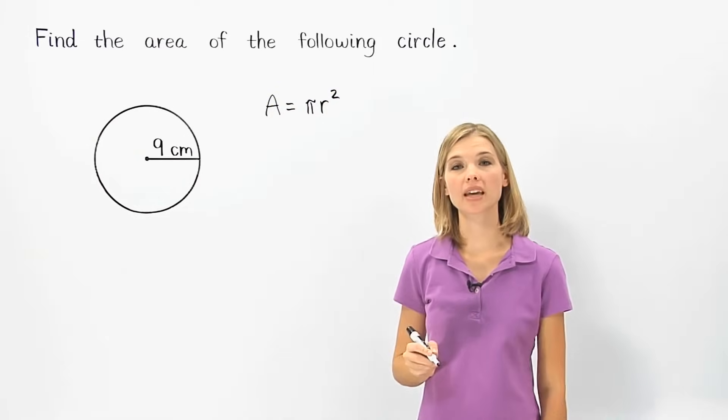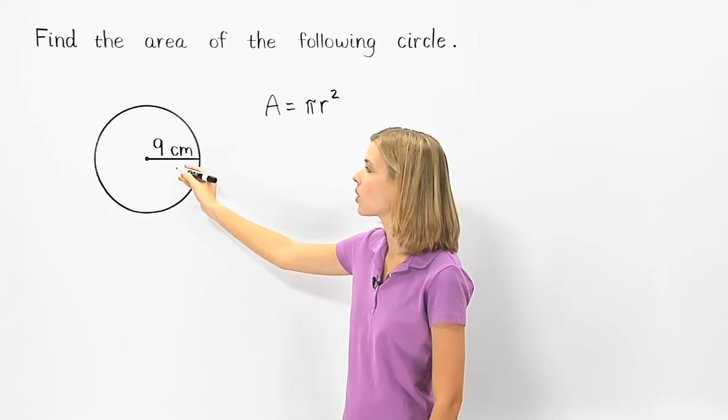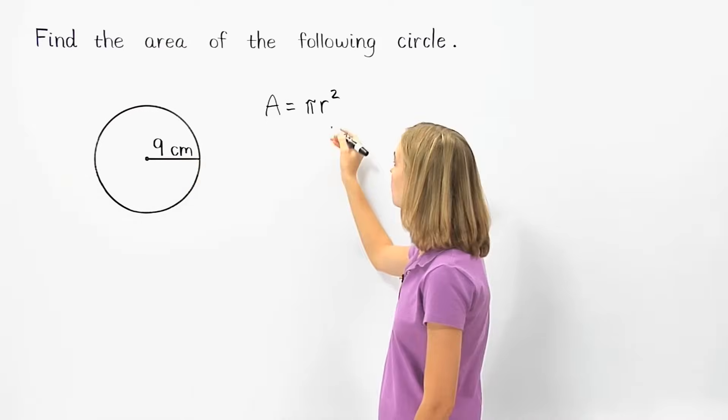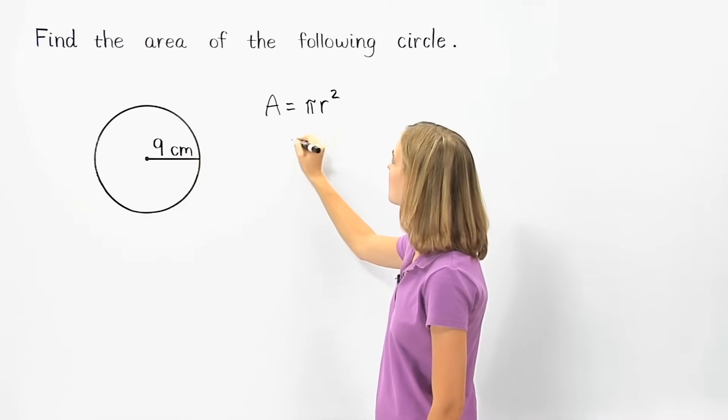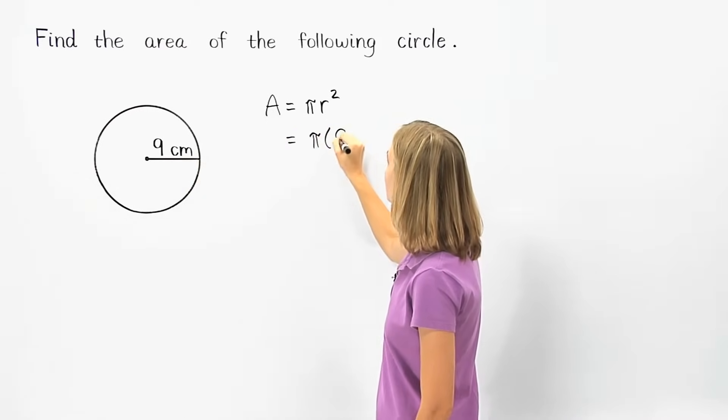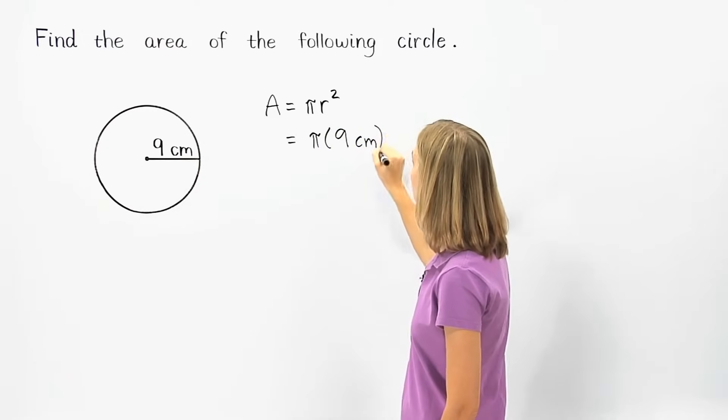Since the radius of the circle shown is 9 centimeters, we can plug 9 centimeters in for the radius in our formula, and we have pi times 9 centimeters squared.